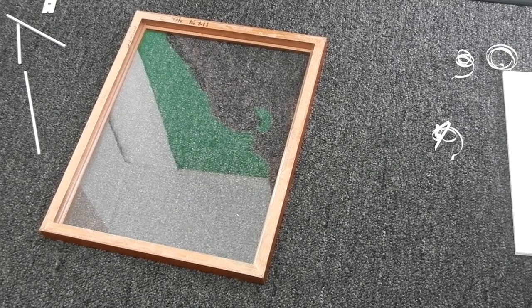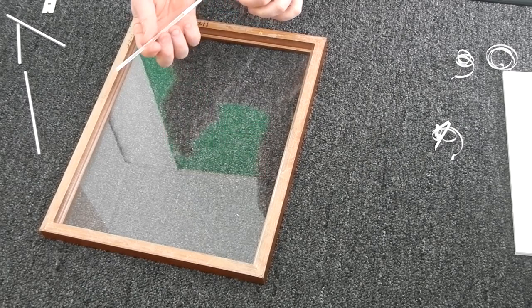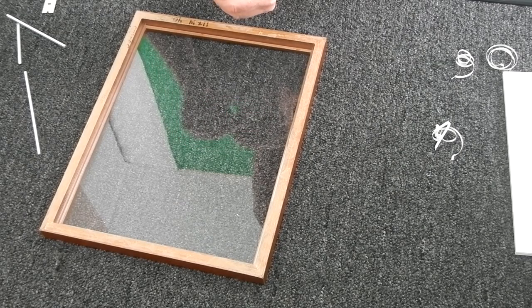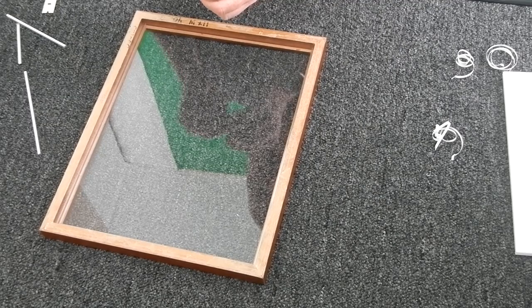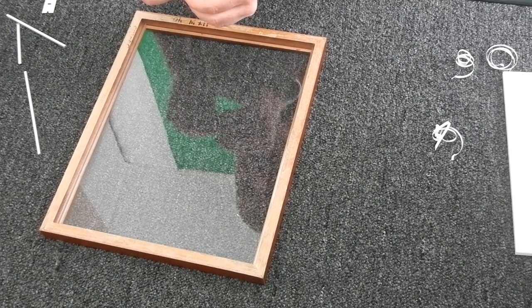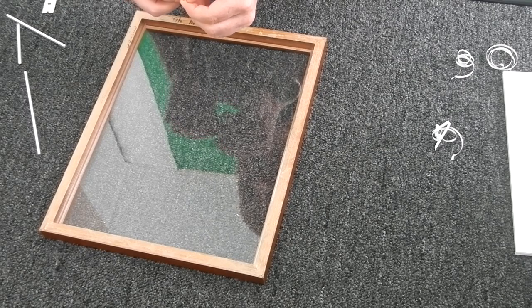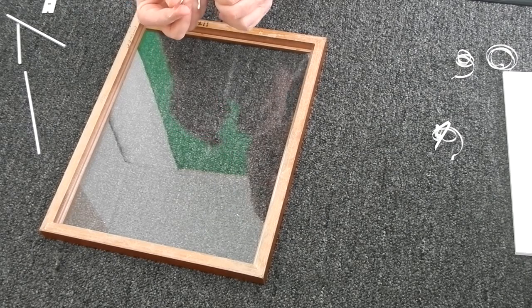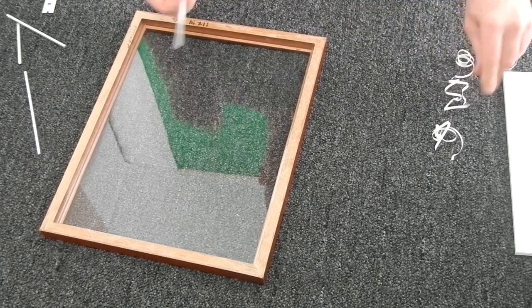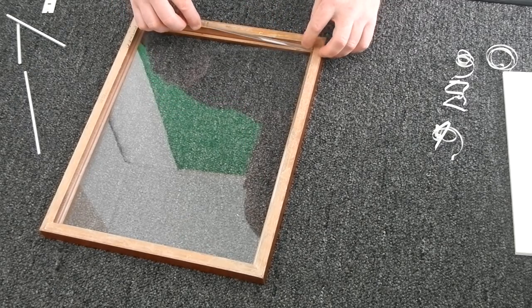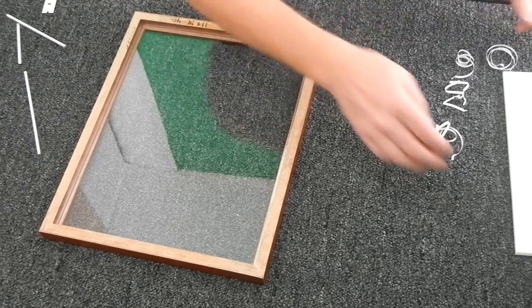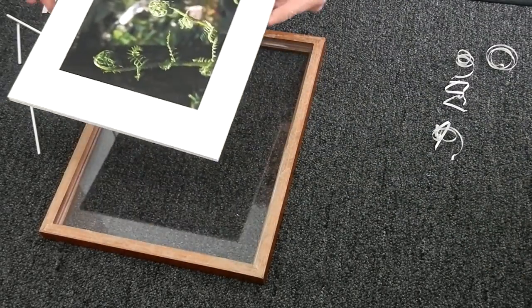The example I have to show you is one that already has a mat on it. Lots of times you don't use this product when you have a mat. A lot of times when you use this product is when you just have a poster or a watercolor. You use it for fine art when you don't want that to touch the glass basically. Ignore the fact that I have a mat on my piece—lots of times it would just be a poster.